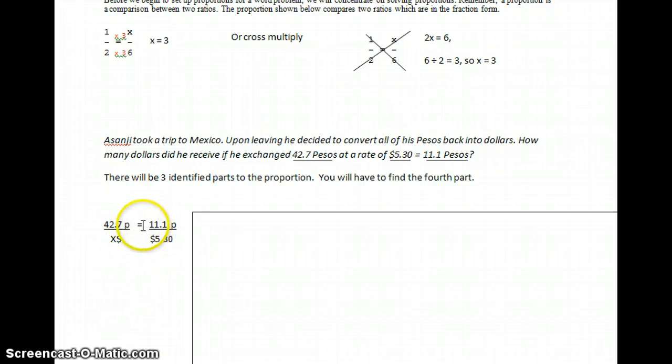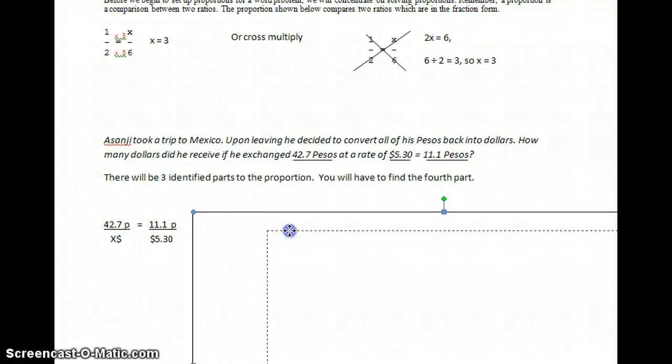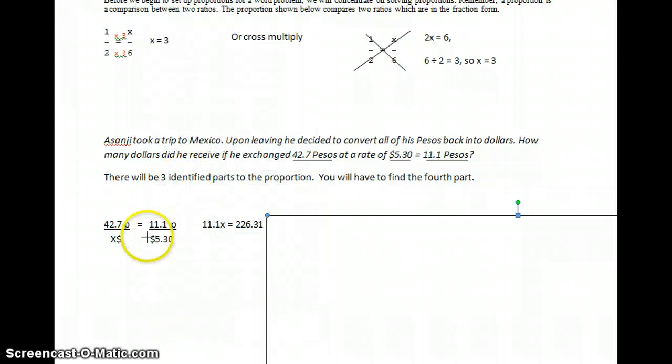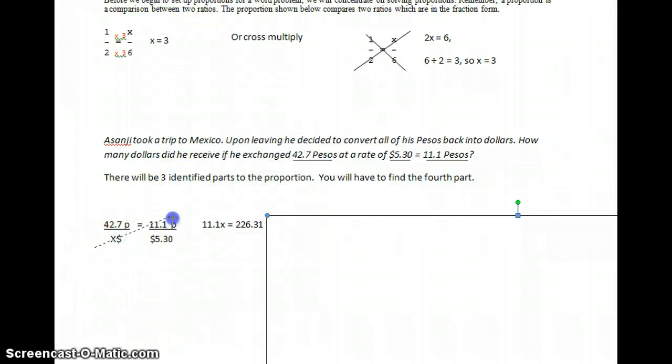So, we can't really solve that too easily with 42.7 and 11.1. So cross-multiplying is probably the best bet. I'm going to start cross-multiplying. x times 11.1, that gives me 11.1x. My next move is 42.7 times 5.30. I did that at a time, and that gives me 226.31.